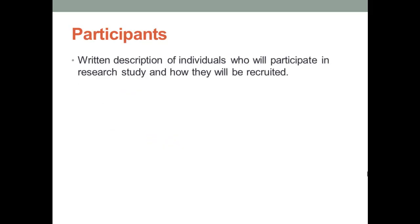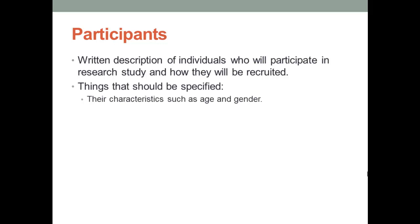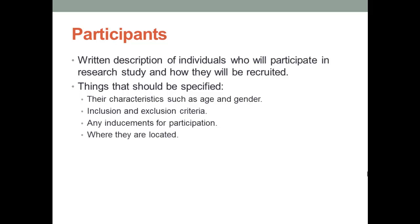The subsection of the Method section entitled Participants should provide a written description of the individuals who will participate in your research study and how they will be recruited. Be sure to specify their demographic characteristics such as age and gender, inclusion and exclusion criteria you will use, and any inducements for participation you plan to use, as well as where the participants are located. If you do not have access to the participants you intend to use, pending proposal approval, you should provide the best estimate of the sample's characteristics as possible.